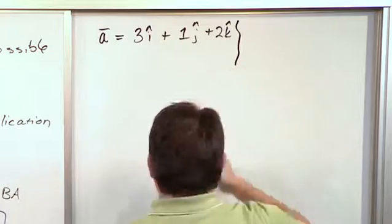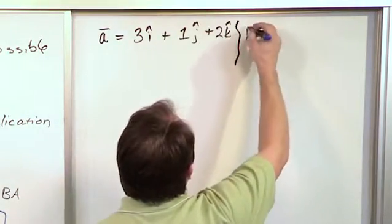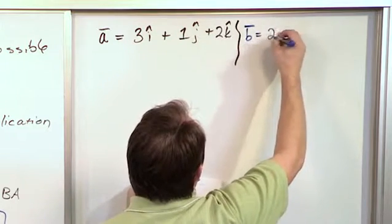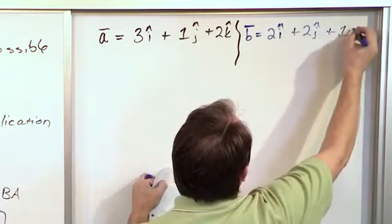We can also define another vector. We can define as many vectors as we want, but in this case, let's call it vector b. And let's say that it had a 2i plus 2j plus 1k.